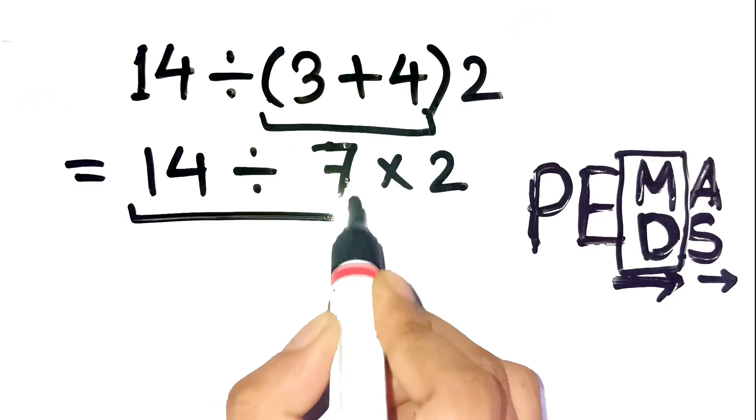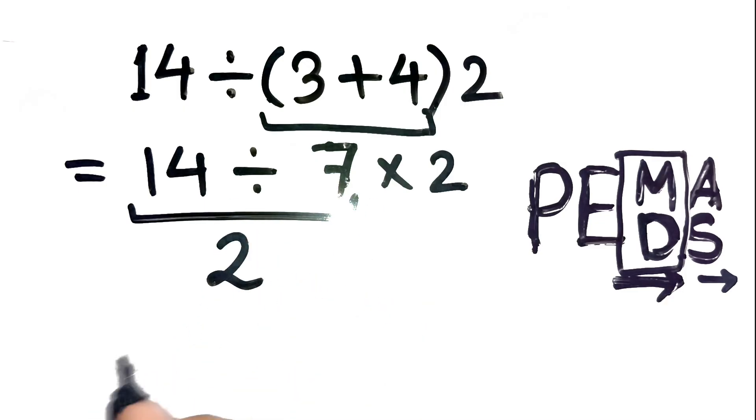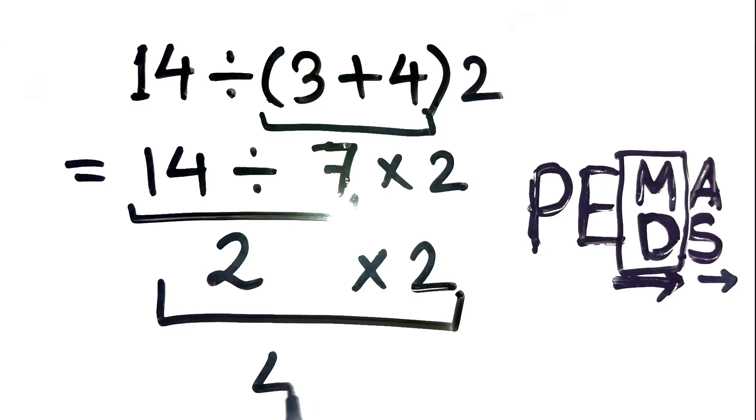So first, 14 divided by 7 equals 2. Then we multiply that result by 2. 2 times 2 equals 4. So the correct answer is 4, not 1.